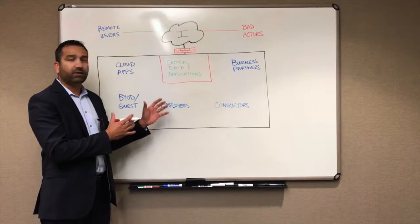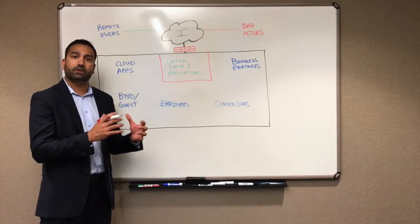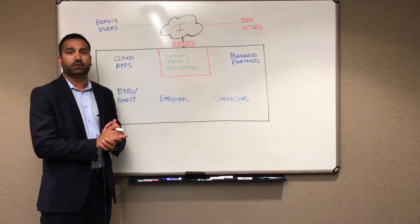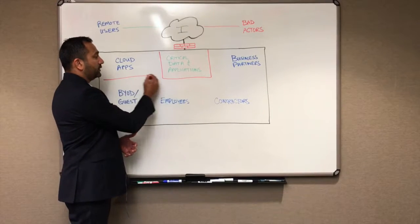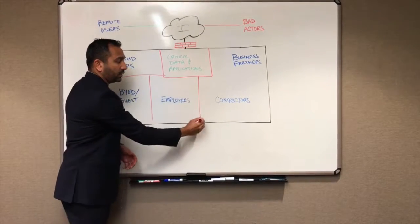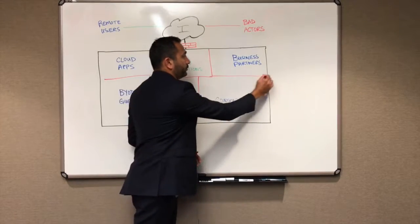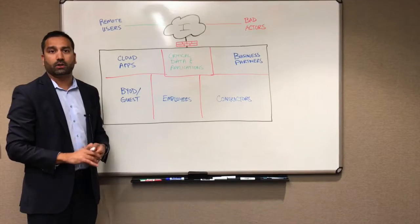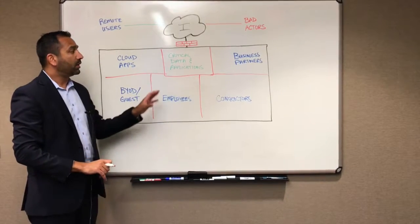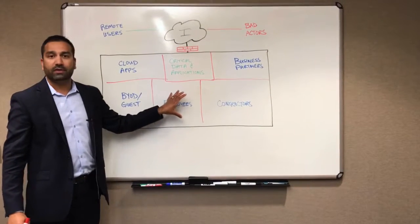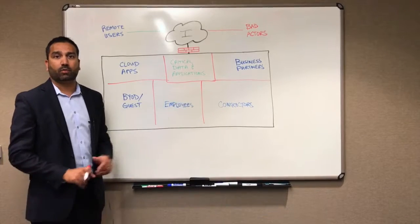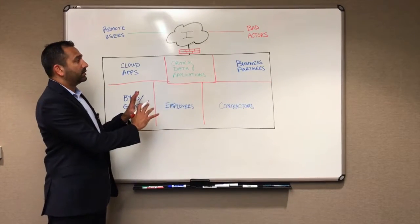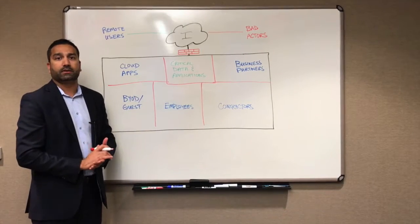And even if they're getting access, you're still applying additional security controls before they can access those critical data and applications. So this allows you to not only segment your internal network and provide those additional controls for folks trying to get to your critical data and applications, but also ensures that if one of these systems in these segments are breached, that they are contained within that environment and still protecting your critical assets and your data.